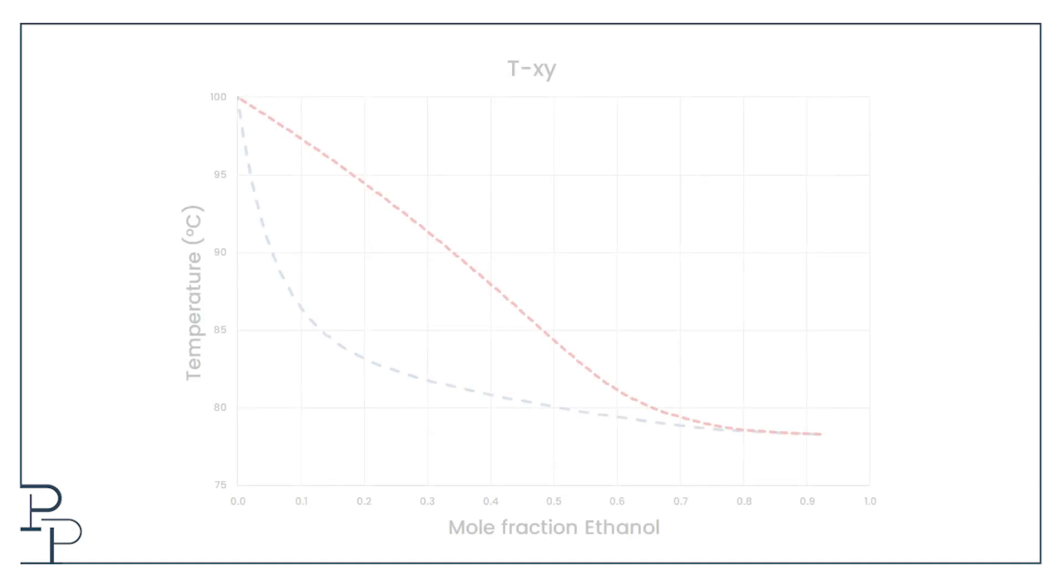We need two tools to answer the question. The first is the vapor-liquid equilibrium data for water and ethanol. Go watch my video on boiling water versus boiling vodka for a full explanation. Suffice it to say that this data shows the temperature at which a mixture of ethanol and water boil, depending on how much ethanol you have in the liquid to begin with, as well as how much ethanol there is in the vapor that boils off of that liquid.